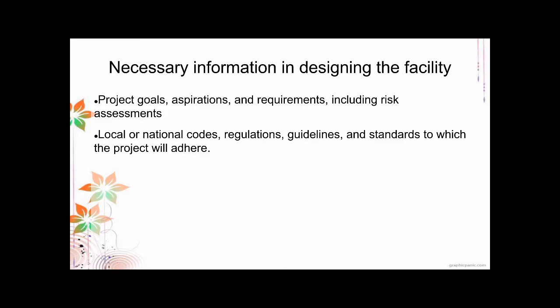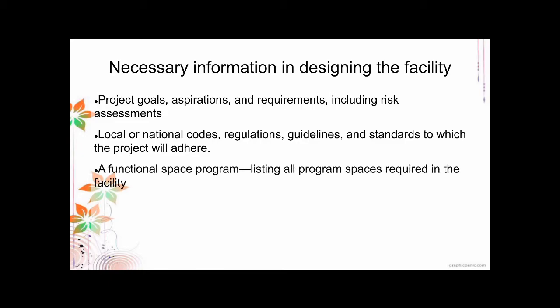For example, if you want to study a risk level 3 agent, there are accompanying safety standards — does the facility handle that risk level, or do you need to upgrade it? Also, a functional space program lists all program spaces required in the facility. Each facility has spaces allotted for specific goals or processes, and you need a proper space allocation for each part of your facility.